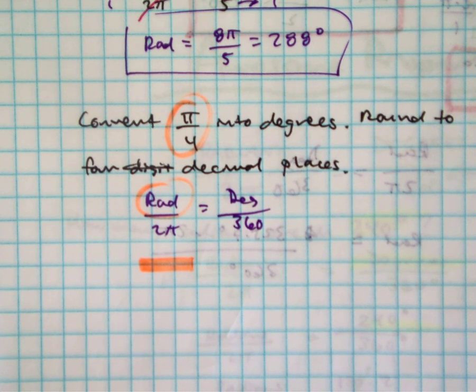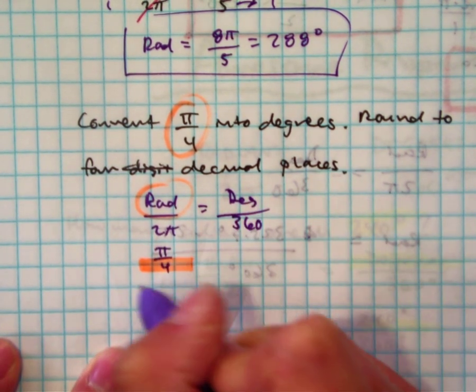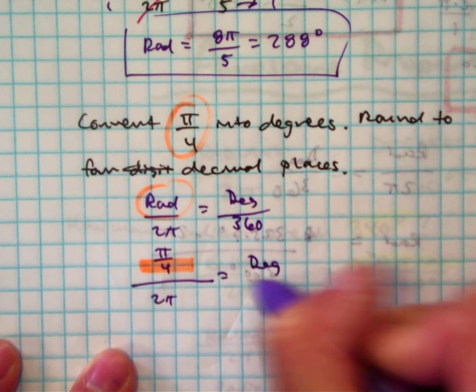So now we're going to put that there. π over 4 divided by 2π equals degrees over 360.